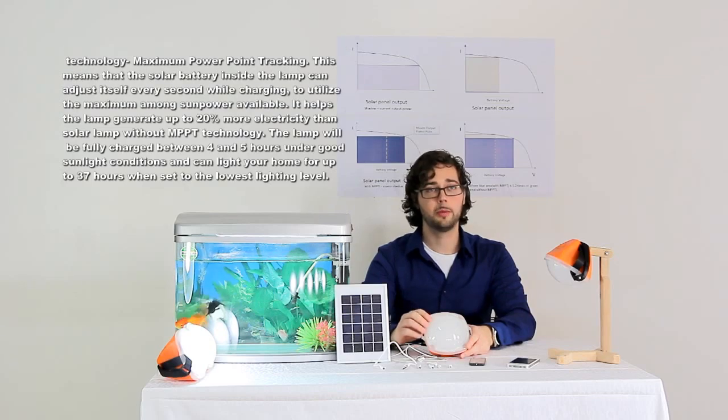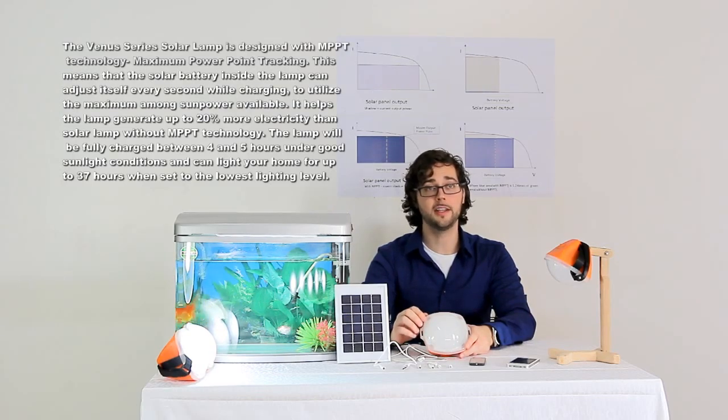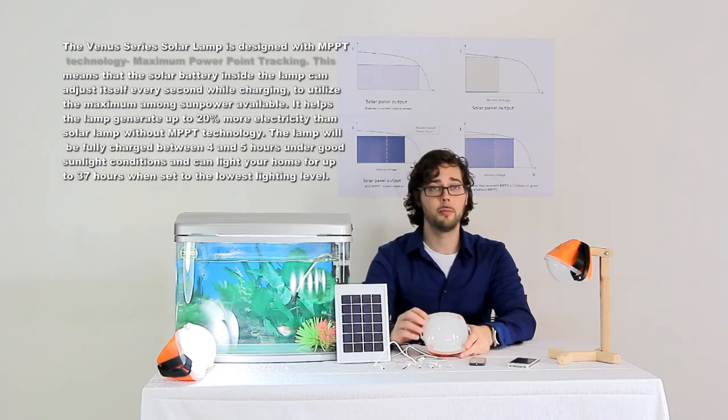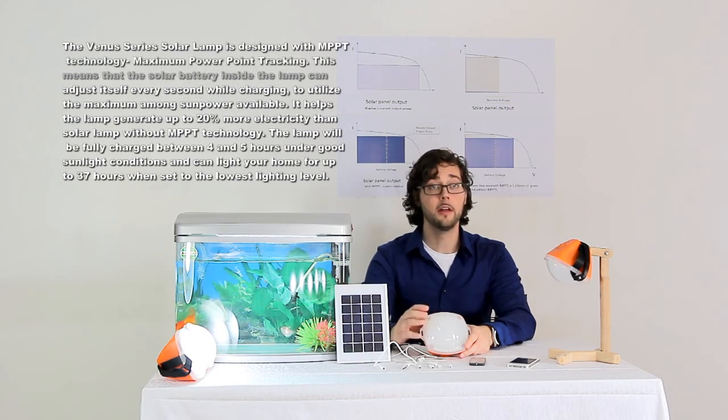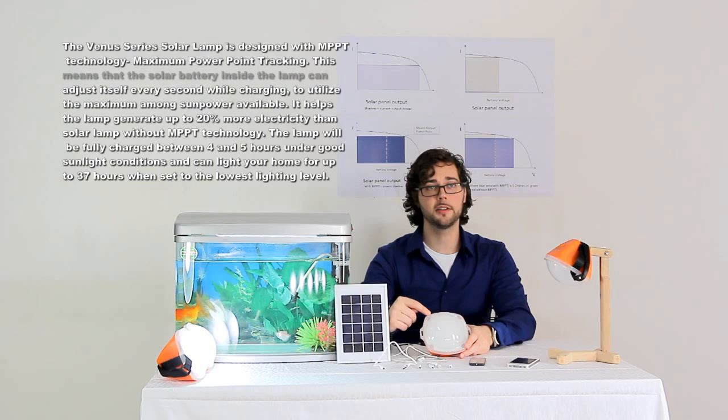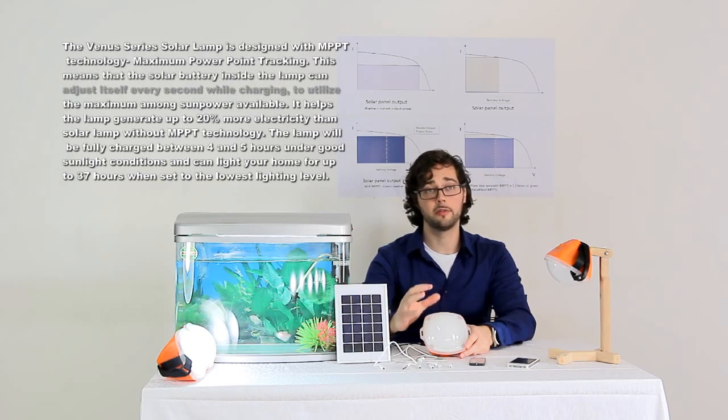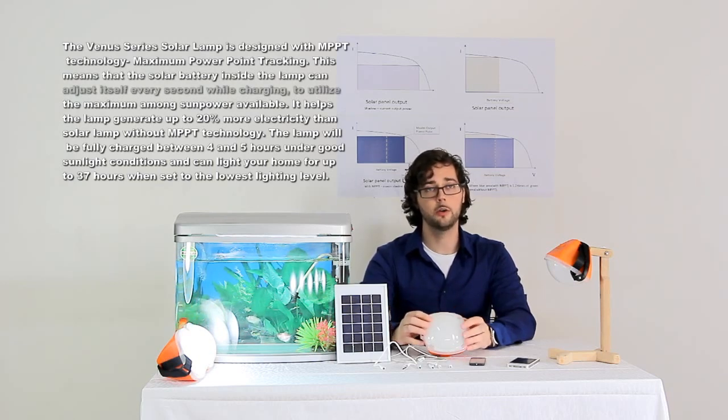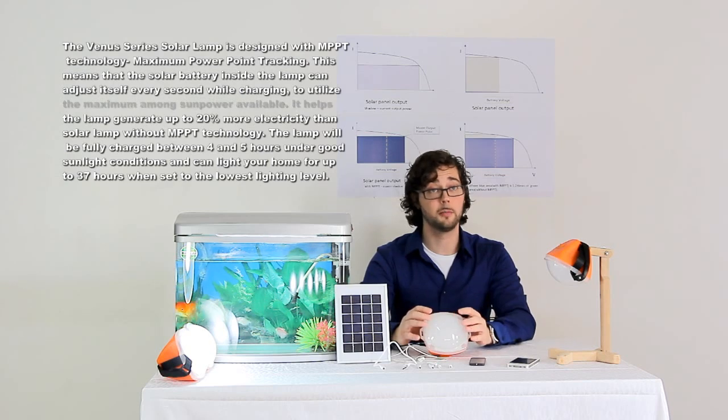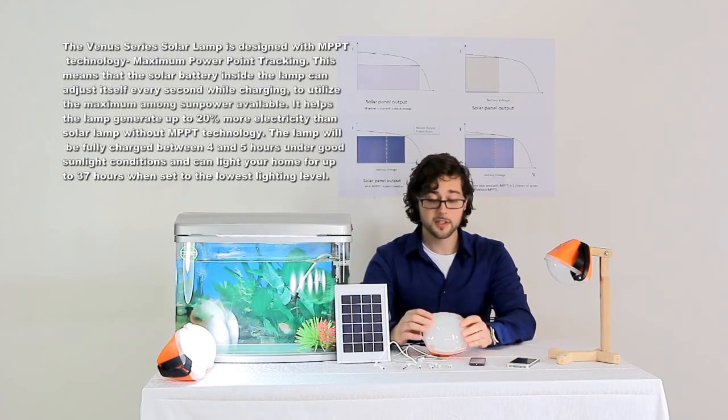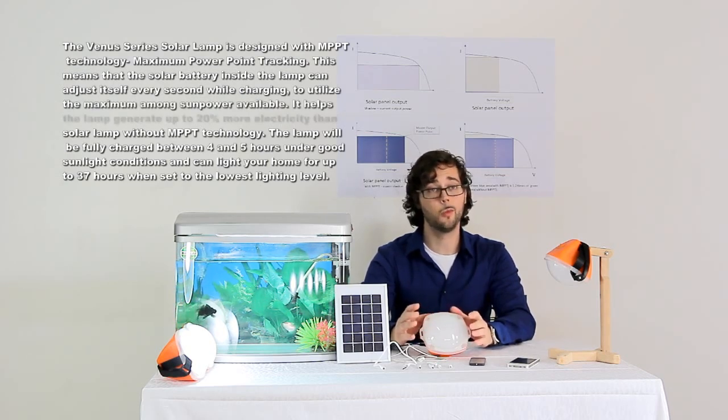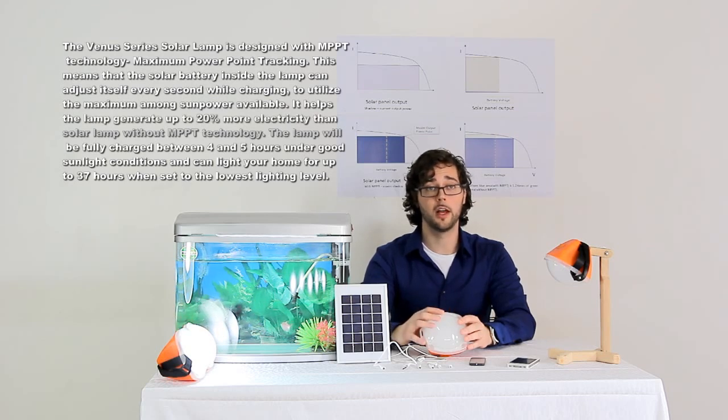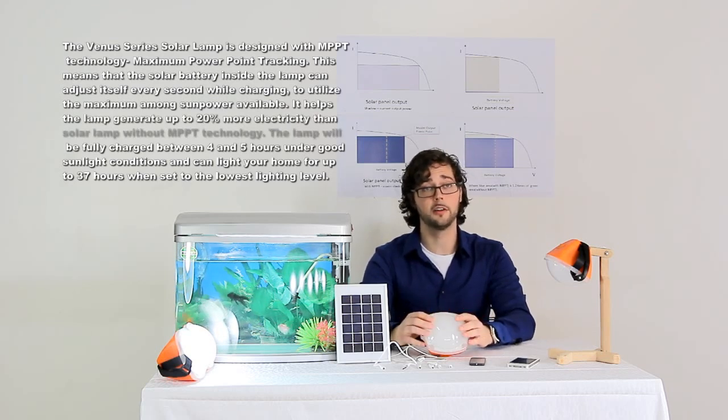The Venus series solar lamp is designed with MPPT technology, maximum power point tracking. This means that the solar battery inside the lamp can adjust itself every second while charging to utilize the maximum amount of sun power available.